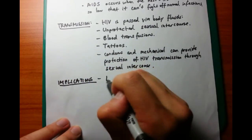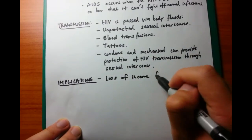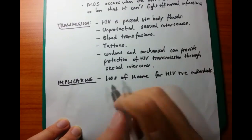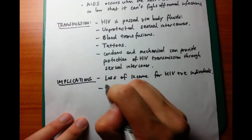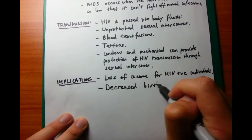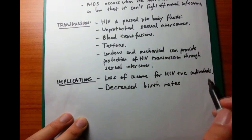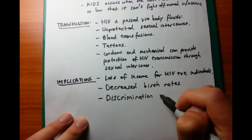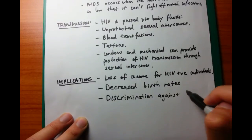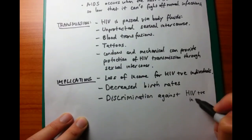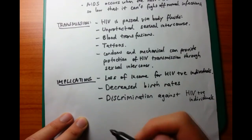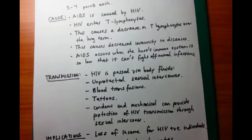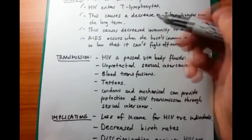We can now move on to implications, or the effects of AIDS on humans. Think of these in terms of functional effects. For example, the loss of income because HIV-positive individuals won't be able to get jobs because employers don't trust them. They have decreased birth rates because families are scared of spreading the virus, so they decrease their sexual intercourse rates. And finally, you might have discrimination against HIV-positive individuals — whether that's exclusion from jobs, non-sexual relationships, or building up connections for business.